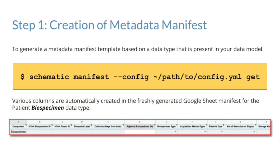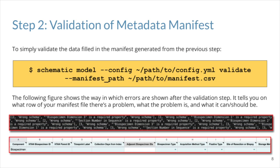The first step in the data curation lifecycle is annotation, so the command that you can run to generate the Google Sheet interface for a specific data type is shown on this slide. The result is a Google Sheet with standard columns for annotating a patient biospecimen dataset. We then come to the second component of the data curation lifecycle: validation. You can see validation features like drop-downs restricting values for a column, and color schemes indicating required versus optional fields.